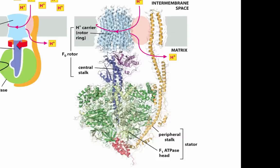Combined, this structure is made of two different proteins — one that is dark green and one that is light green. There are three darker green subunits and three lighter green subunits, and those combined make the F1 ATPase head, which we call the stator.